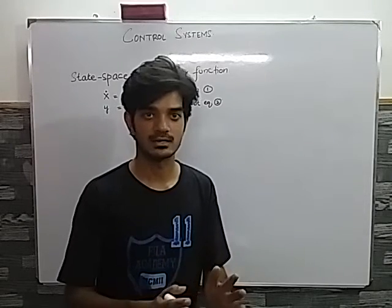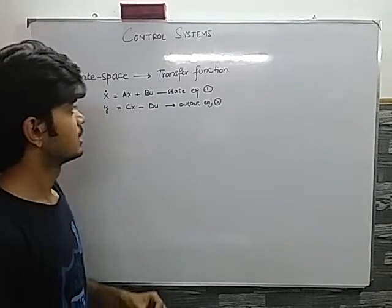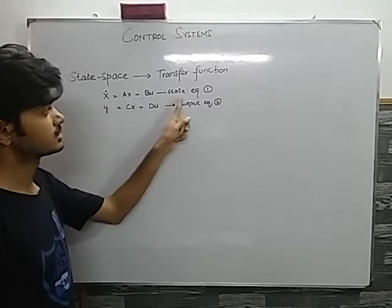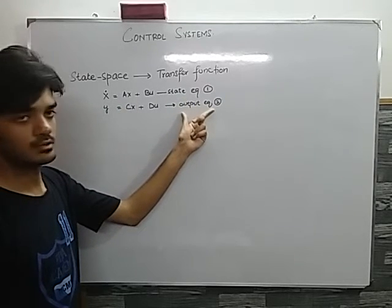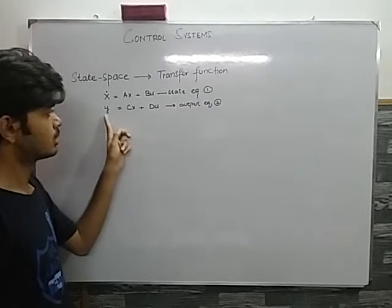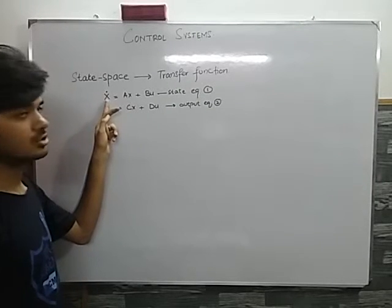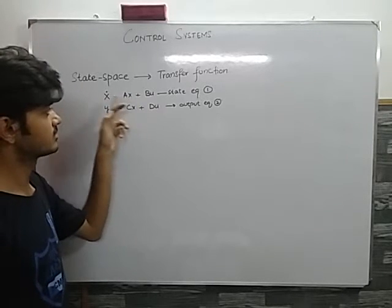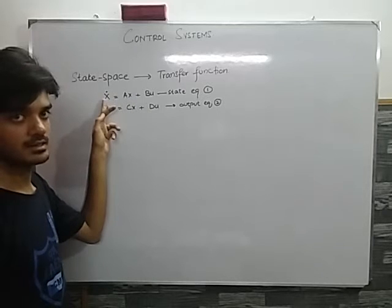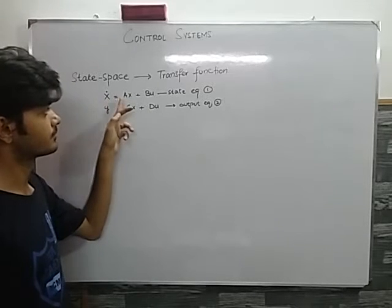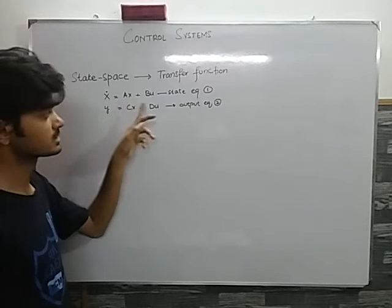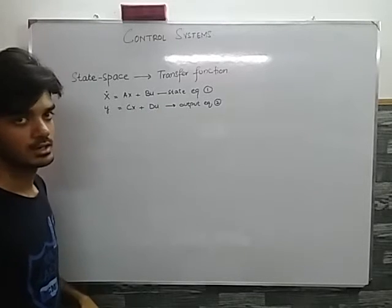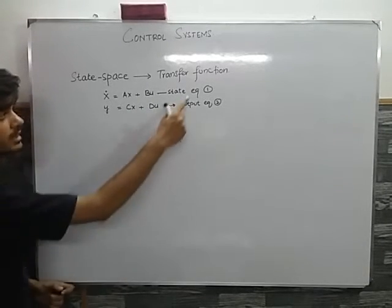I have written these two equations — these two equations are the representation of my state space. The first equation is the state equation and the other one is the output equation. Here y is an output, and x-dot means the derivative term of x. x is a state vector, and x-dot represents the derivative of our state vector with respect to time. A is our system matrix, B is our input matrix, C is an output matrix, and D is a feedback matrix.